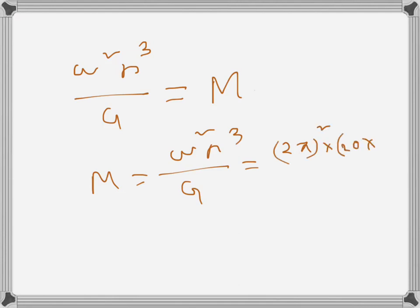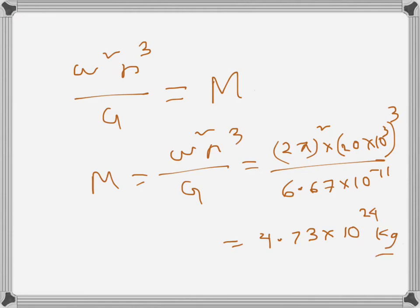r³ is 20 into 10 to the power 3, that cubed, divided by G which is 6.67 into 10 to the power minus 11 in standard unit. Once we do that, we get what I got is 4.73 into 10 to the power 24 kg.